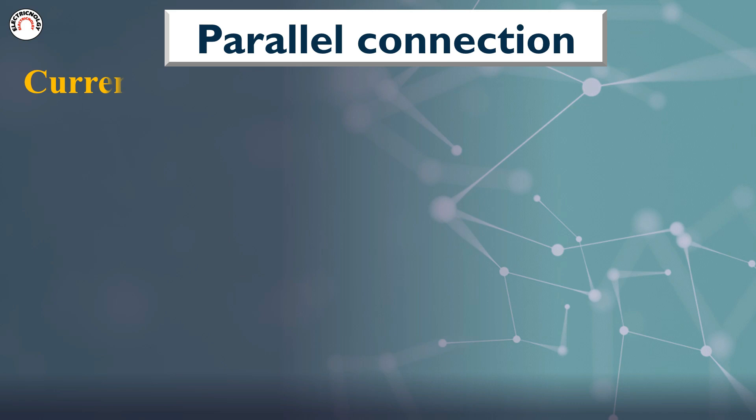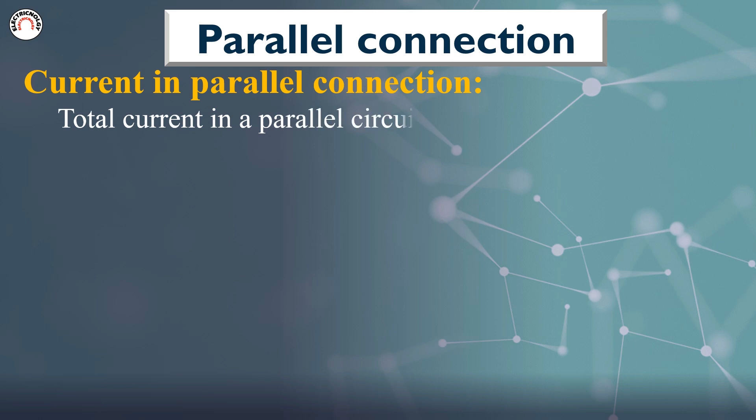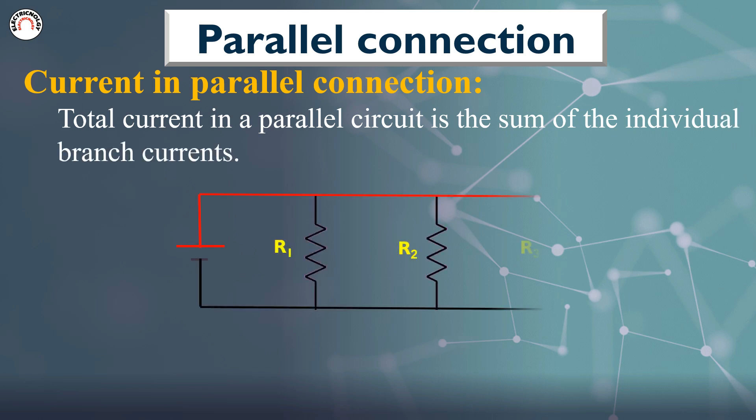Current in Parallel Connection: Total current in a parallel circuit is the sum of the individual branch currents. IT equals I1 plus I2 plus I3.